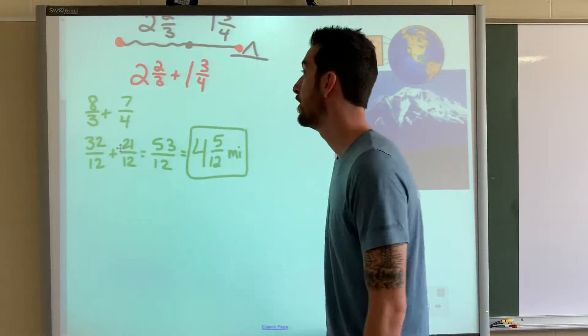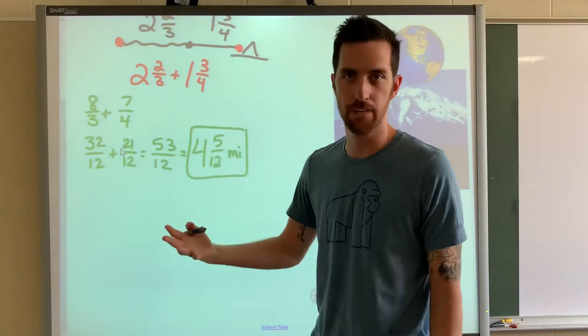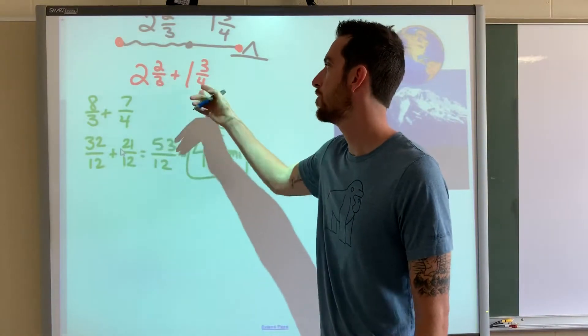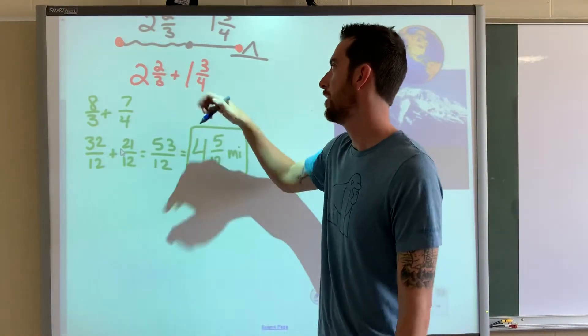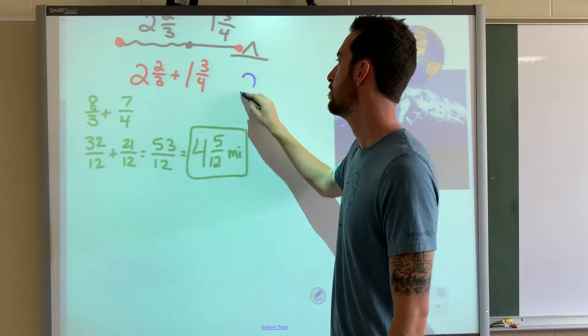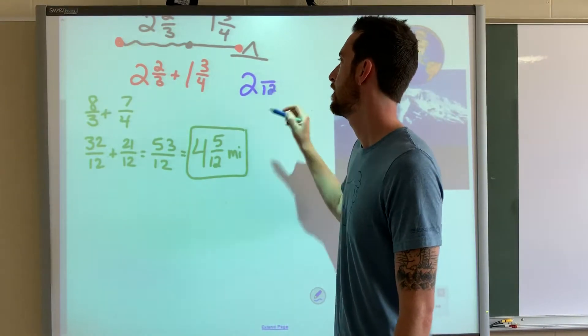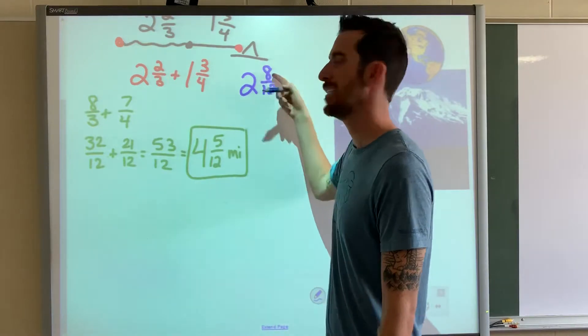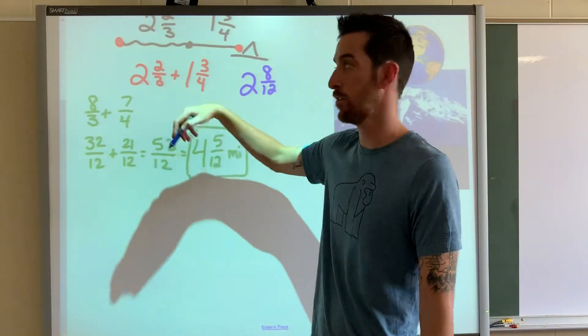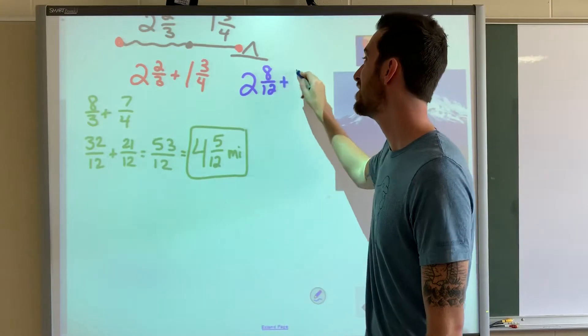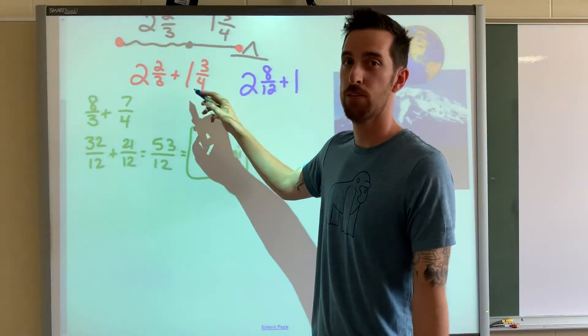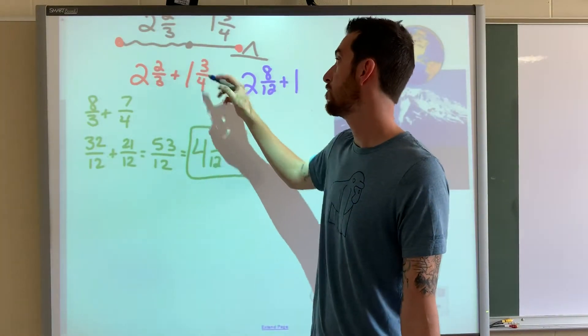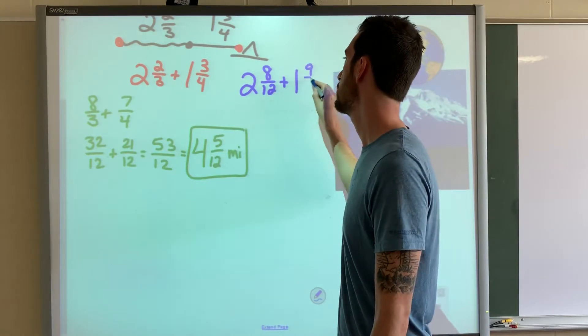Or you can keep them as mixed numbers, but then get them to have the same denominator. So four and three is 12 again. So two and two-thirds would be two, three times four. So two times four is eight. So two and eight-twelfths. That's the same as two and two-thirds. Those are equivalent fractions. Plus one, four times three gives you 12. So three times three would give you nine-twelfths.